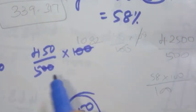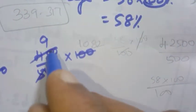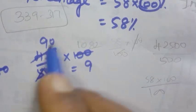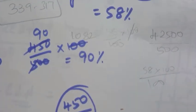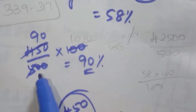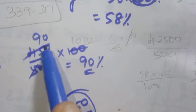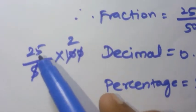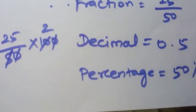450/500 × 100: the two zeros cancel, leaving 450/5 = 90. So you score 90%. The formula is: shaded part divided by total, multiplied by 100, gives the percentage.